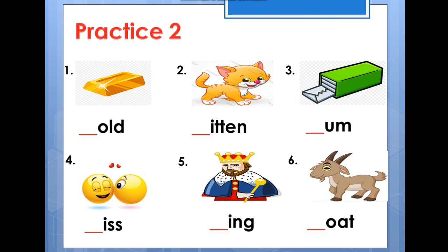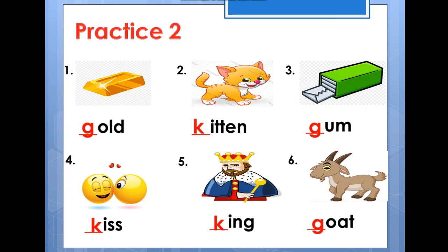Good, now let's check the answer everyone. Number one begins with letter G. Number two begins with letter K. Number three begins with letter G. Number four begins with letter K. Number five also begins with K. Number six begins with G. Yeah, very good everyone, thank you!